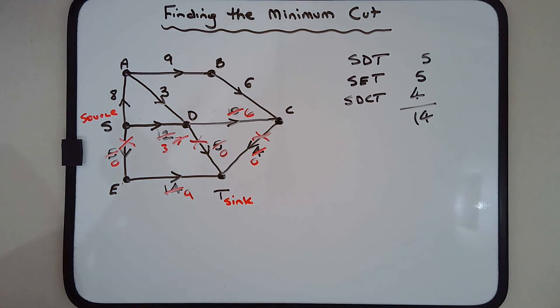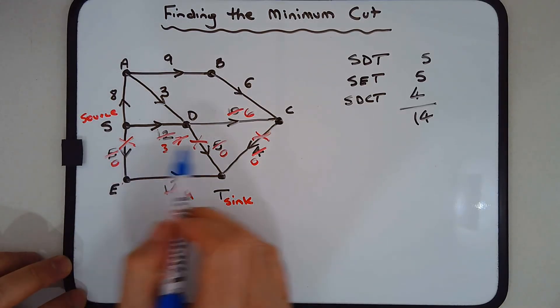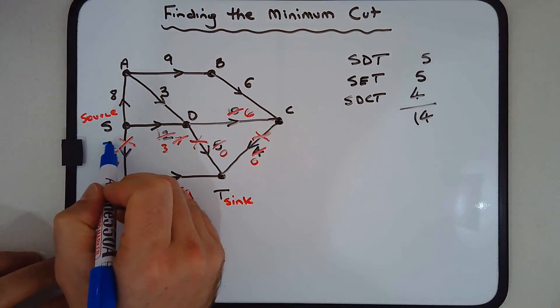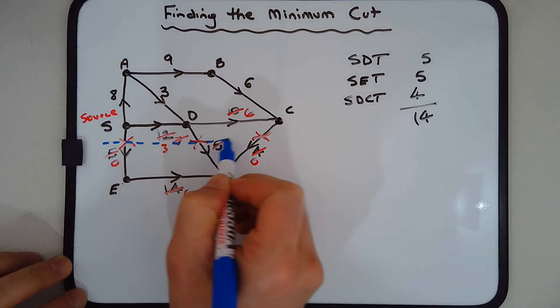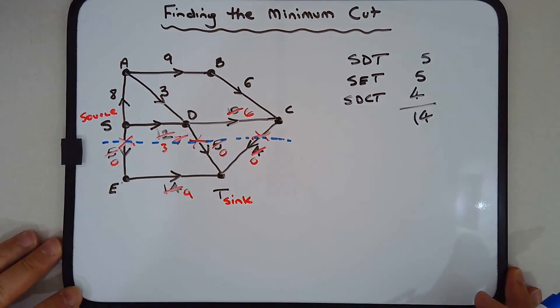That means the cut of minimum value, or the minimum cut, would have to pass through these three X's. It would have to pass through there, and that blue line would then represent the minimum cut. Thanks for watching.